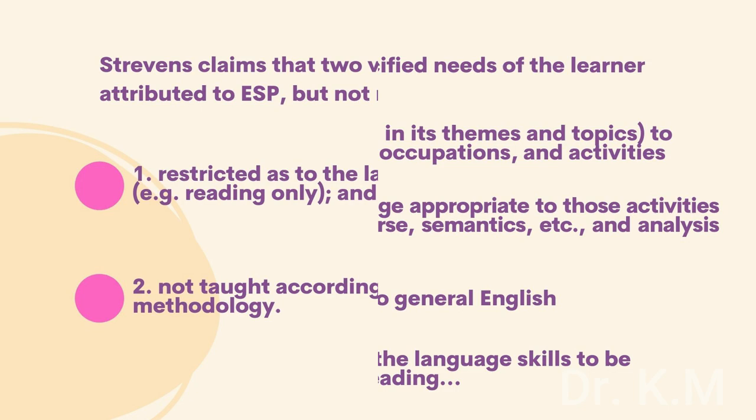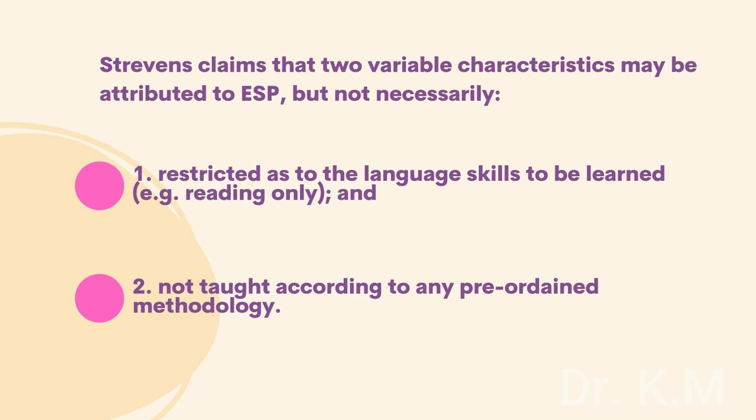Strevens claims that two variable characteristics may be attributed to ESP, but not necessarily: 1. Restricted as to the language skills to be learned — that is to say, reading only — and 2. Not taught according to any preordained methodology.